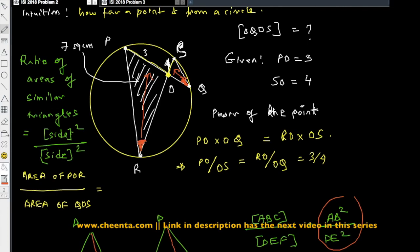So area of triangle POR and area of triangle QOS is equal to PO square by SO square. But that is equal to 3 square by 4 square, which is 9 over 16.